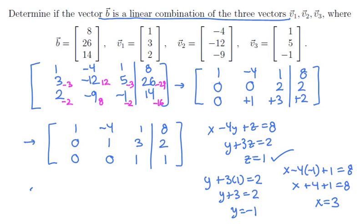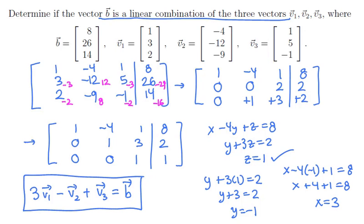That means that we have a solution. If we take 3 times the vector v1, subtract the vector v2, and add the vector v3, then we will obtain exactly the vector b. And so in particular, b is in fact a linear combination of the three vectors.